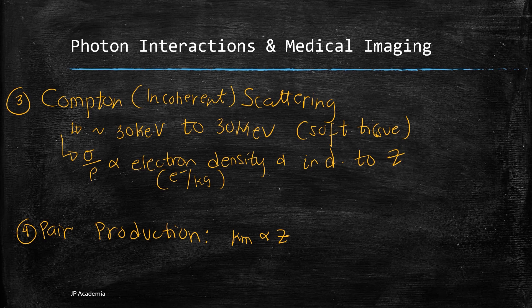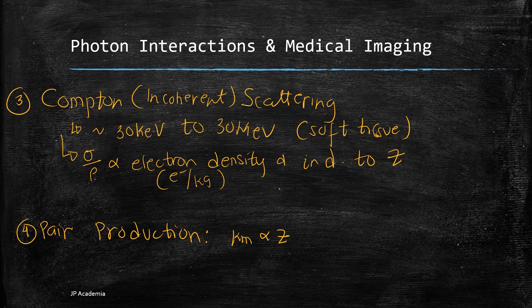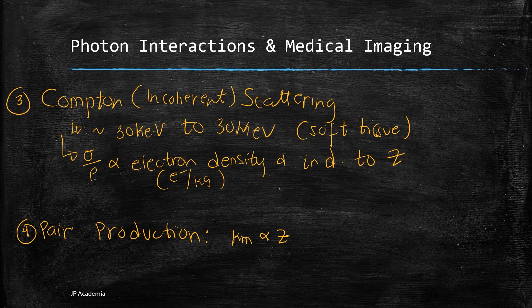Last interaction is pair production. This requires photon energy of at least 1.02 mega electron volts, thus it is irrelevant to radiographic imaging. In addition, its mass attenuation coefficient varies with Z. And that's it for this lecture.